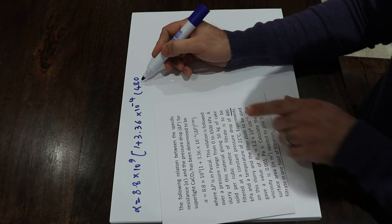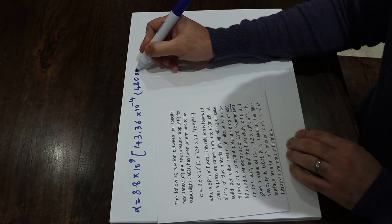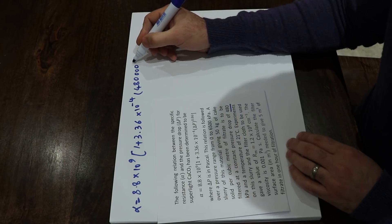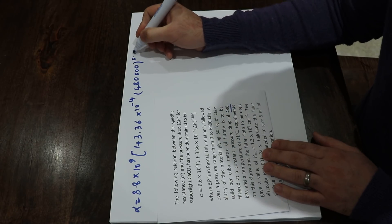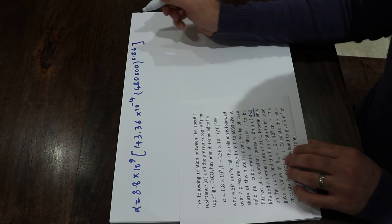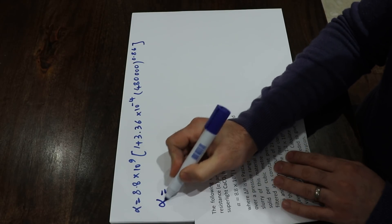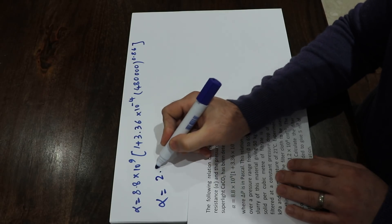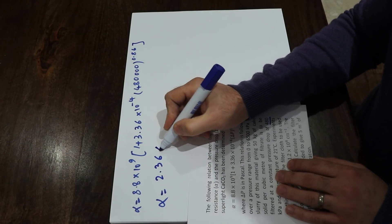But pay attention here, that is 480 kilopascal, so that means you need to multiply by 1000 with the power of 0.86. If you do the calculation here, the alpha value will be equal to 2.36 times 10 to the power of 11 meter per kilogram.